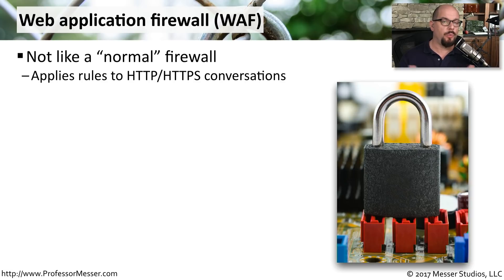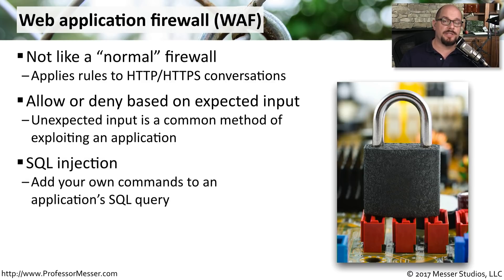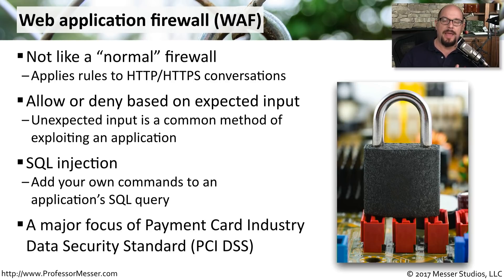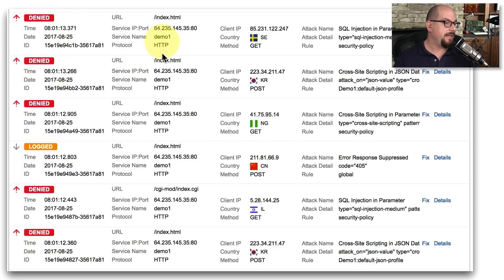Although web application firewalls, or WAFs, have "firewall" in the name, they work very differently than a traditional network-based firewall. A WAF looks at the conversations taking place between the web client and the web server, looking for different types of input, and is able to stop any unauthorized or unexpected input into a web-based application. For example, a SQL injection would be a type of input trying to get around web front-end security to access data in a database. You often see WAFs used in payment card industry environments where the data security standard, or DSS, must be followed to protect credit card information. Here's an example of WAF logs — you can see each instance going through the firewall, the URL, and the attack, such as a suppressed error response or a blocked SQL injection attempt.